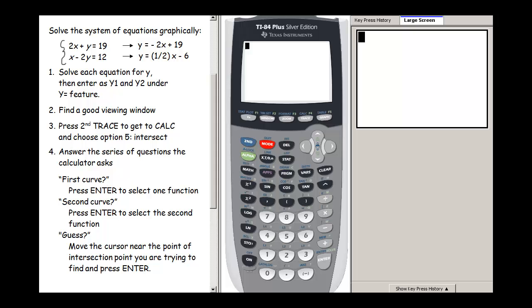The first thing you need to do when you're given a system of equations is to rewrite both of these equations in terms of y. So I've solved this first one, y equals negative 2x plus 19, and I solved the second one for y also.